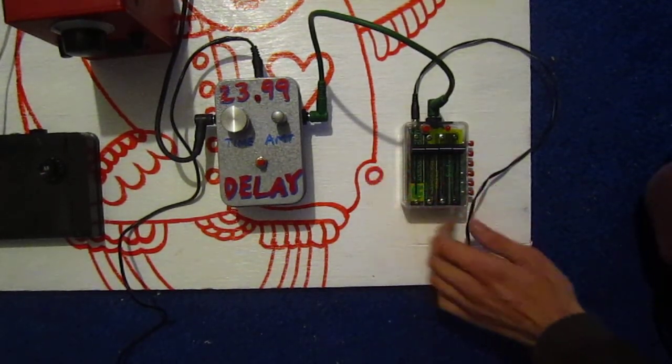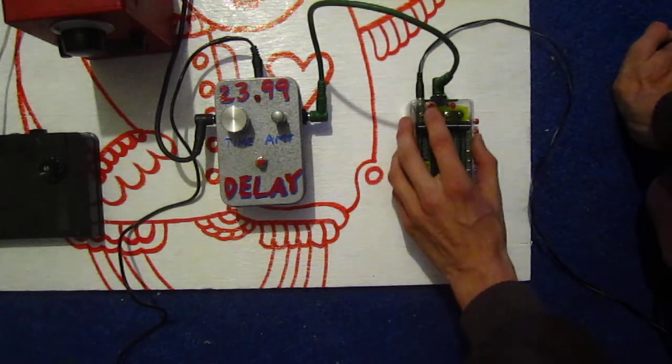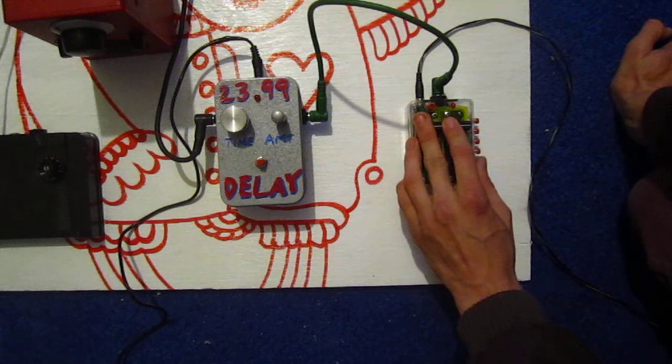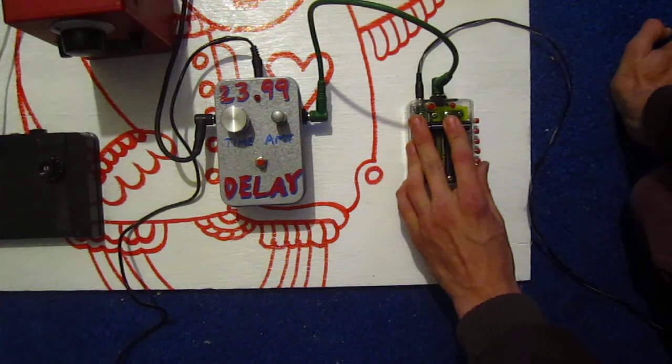Alright, now we have this little noise-making synth I made based on the 40106 chip. It's basically a Hex Schmitt oscillator, which means it's got six oscillating outputs.